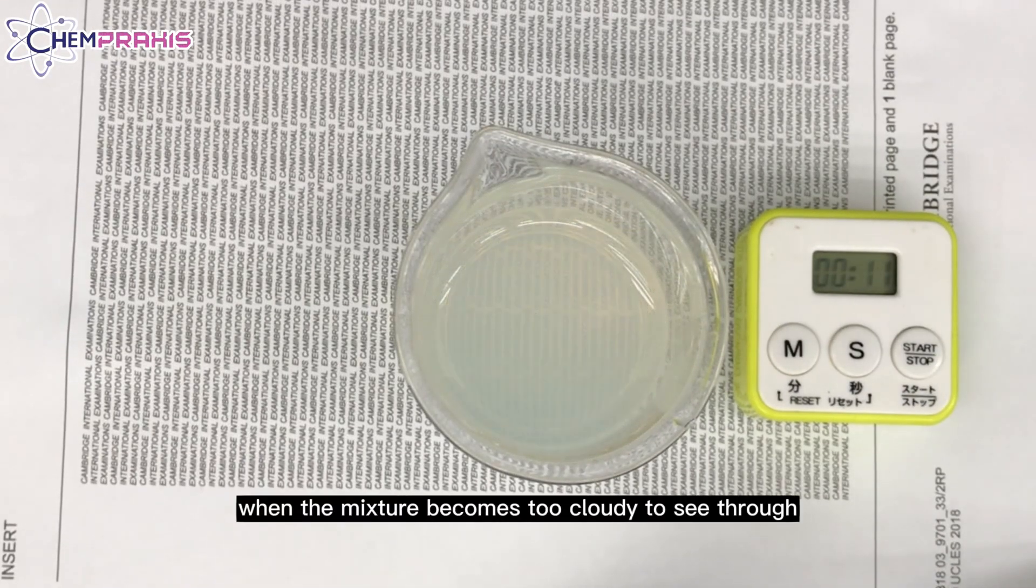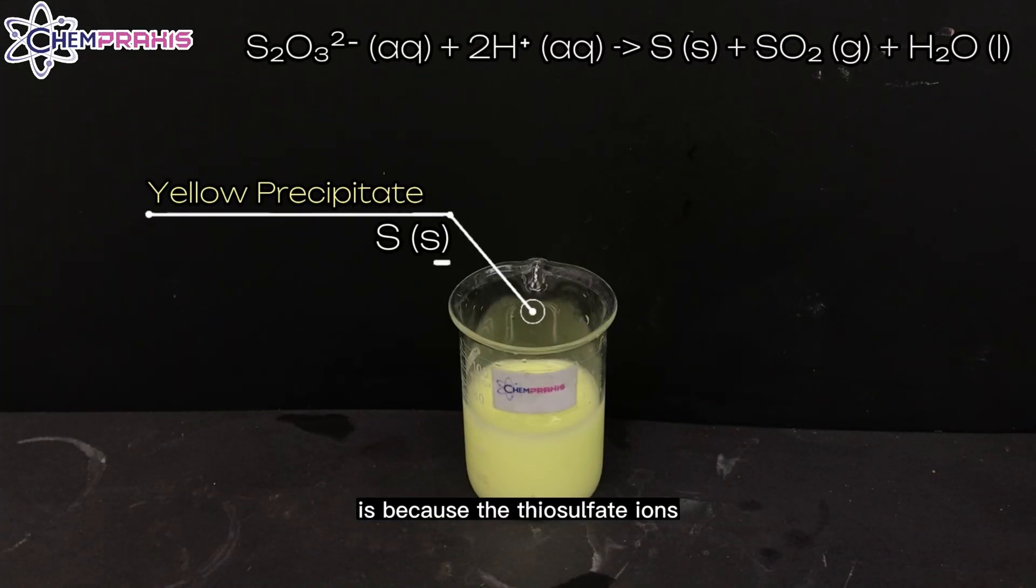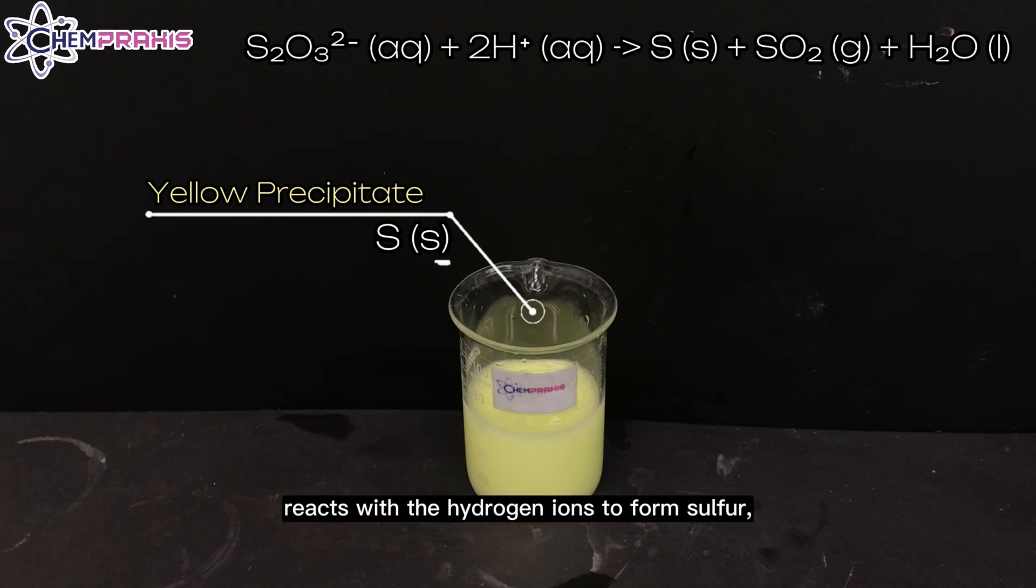Stop the timer when the mixture becomes too cloudy to see through. The reason why this yellow precipitate forms is because the thiosulfate ions react with the hydrogen ions to form sulfur, sulfur dioxide, and water.